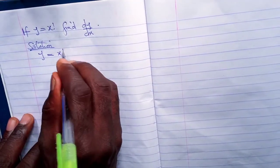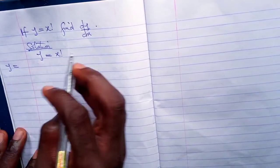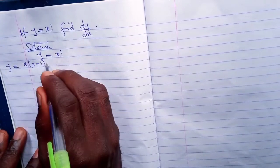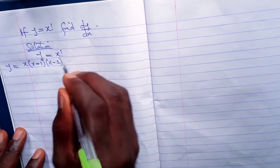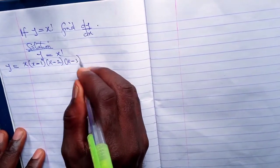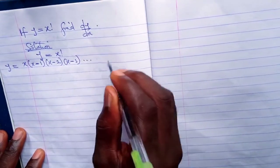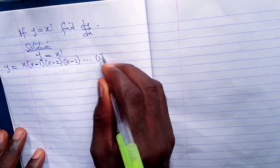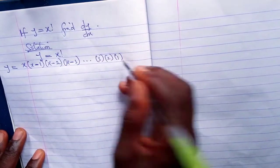Let y equal x factorial, and we know that x factorial is equal to x times x minus 1 times x minus 2 times x minus 3 dot dot dot 3, 2, 1. This is the first step by expanding the factorial form.